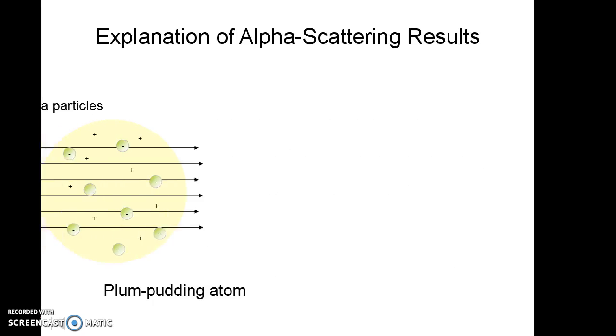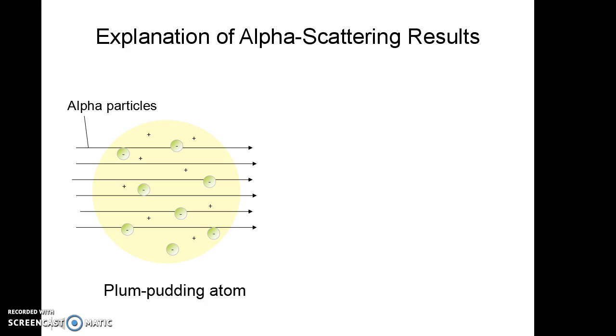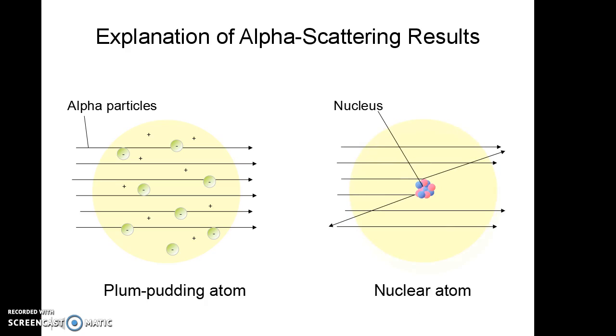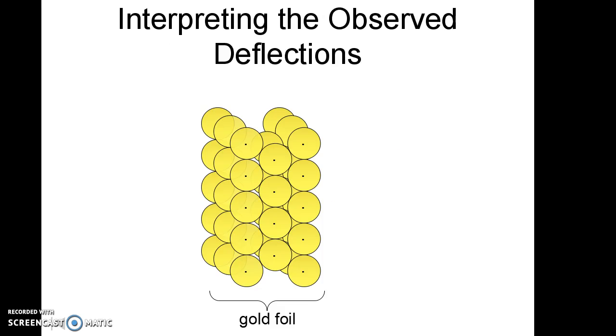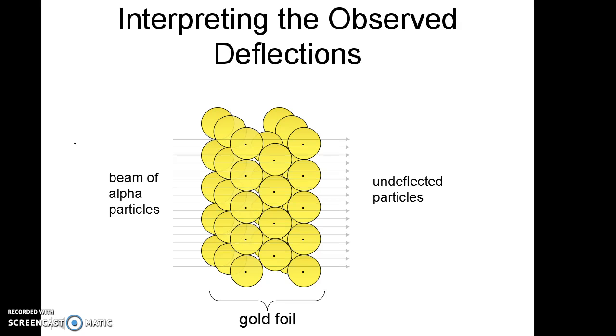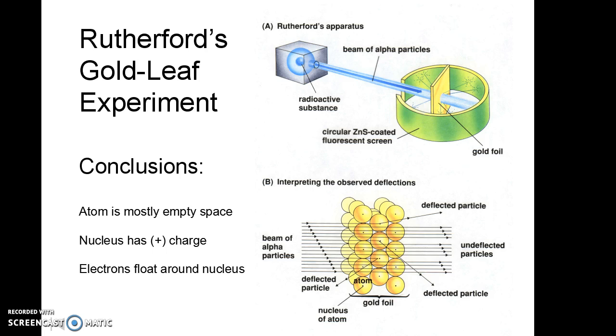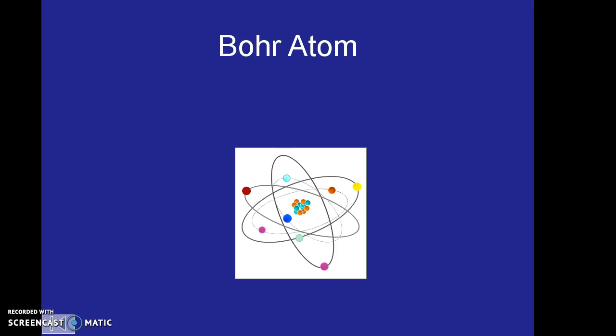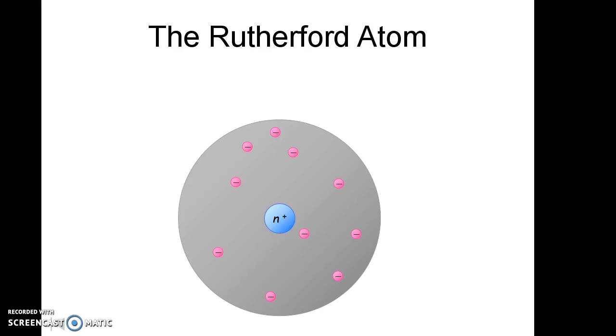And, so if we kind of look now, in the Plum Pudding model, we see the alpha particles represented by air should have just gone right through. But, in the nuclear model, we see that they would only go through if they didn't hit the nucleus. But, if they hit the nucleus, they would bounce off because the nucleus was so dense. And, so this new nuclear model, the atom, is called the Rutherford model. Here is another demonstration. You can see most of the alpha beams coming and just going right through because they missed the tiny little nucleus in the center. But, every once in a while, you'd have one come in and happen to hit that tiny thing and bounce off in a weird direction. And, so that is how he figured out that the atom had a nucleus.